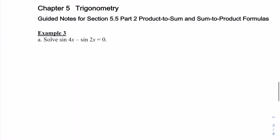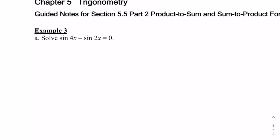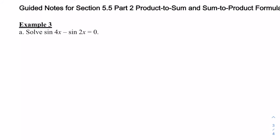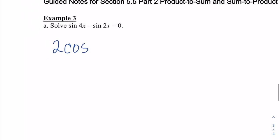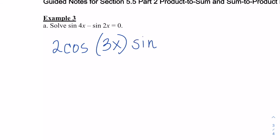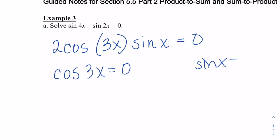Now let's solve an equation using the sum-to-product formulas. When we have something like cos(4x) − cos(2x) = 0, we can't set the terms equal to each other — they're unlike terms and we can't factor directly. So we use the sum-to-product formula to rewrite the difference as 2 times cosine of (4x + 2x)/2 = 3x, times sine of (4x − 2x)/2 = x. Cosine of 3x is zero at π/2 + 2πn.